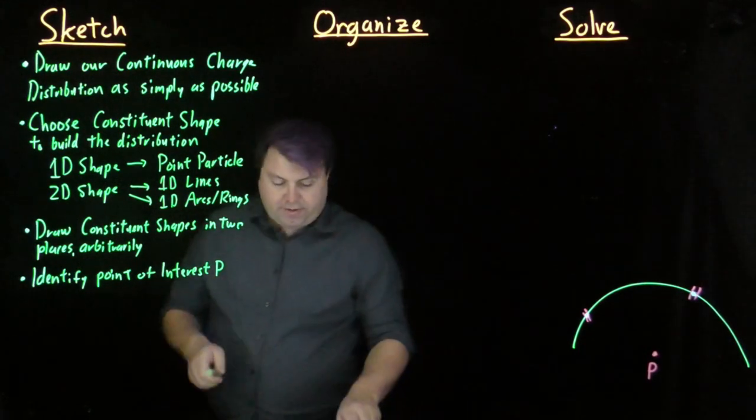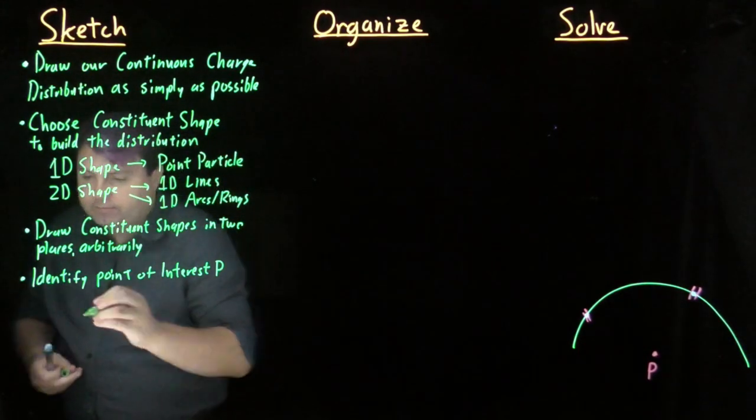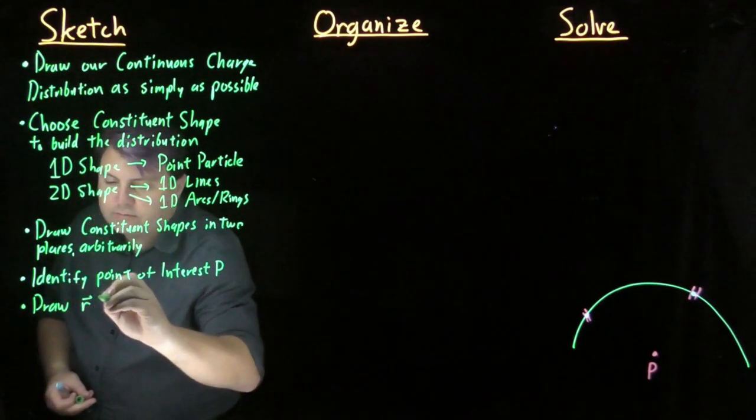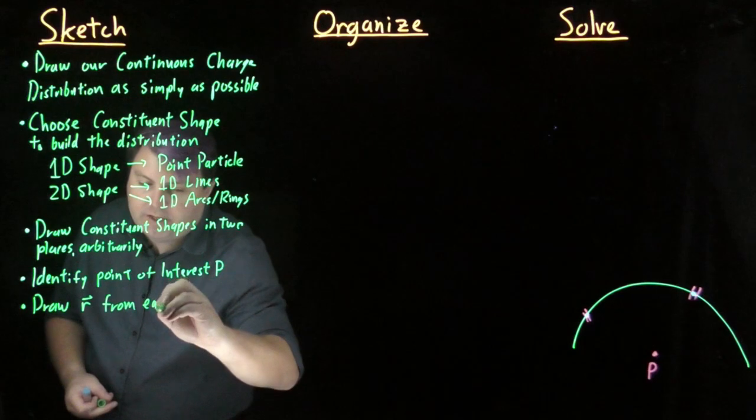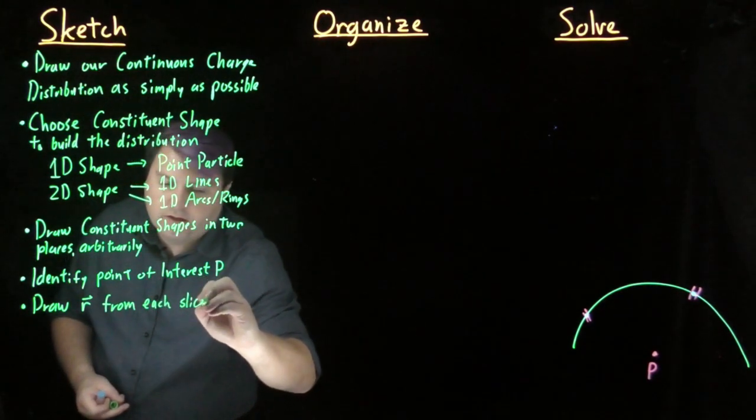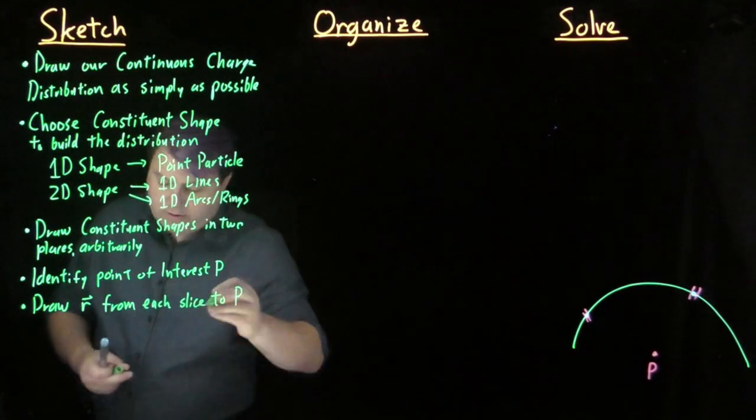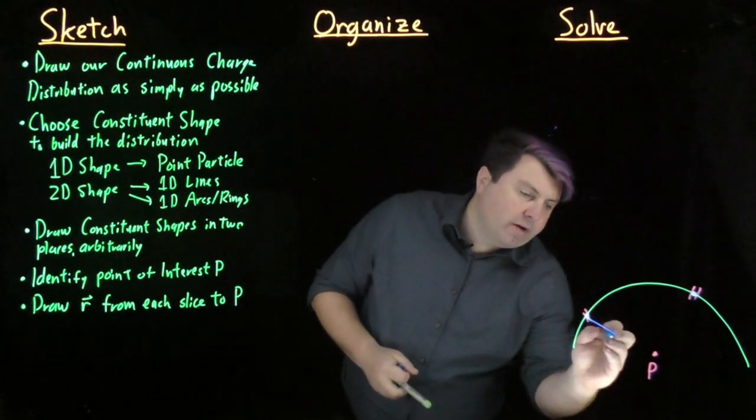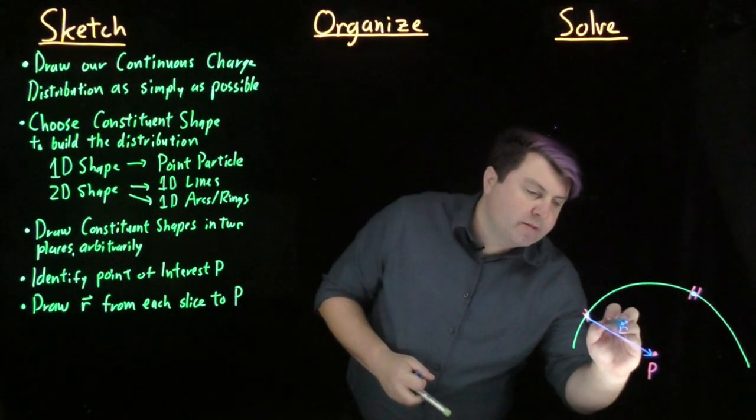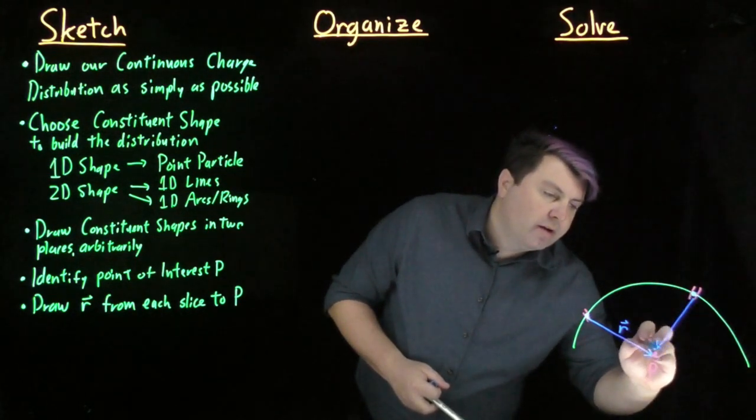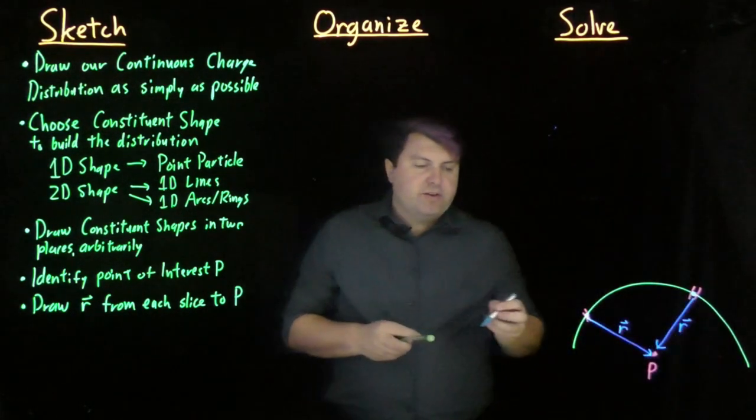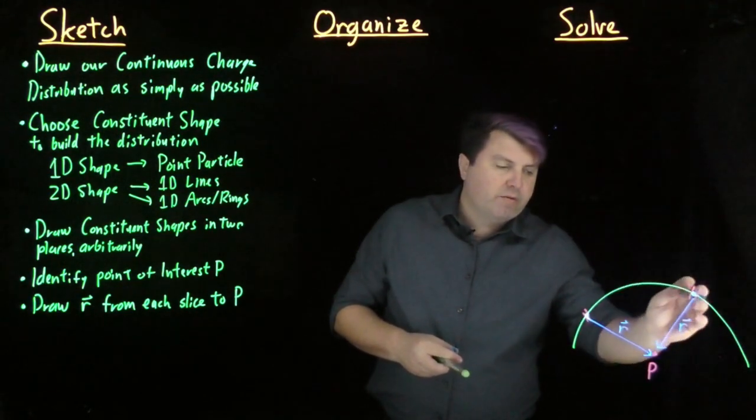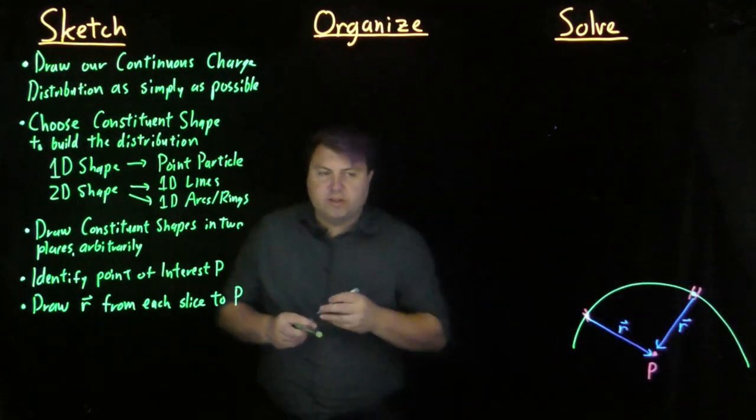Once we've identified a point of interest P, we want to draw R vector from each slice to P. From this point, I will be going this way, and this is my R vector, and this way, and this is my R vector. It's helping us understand that each part of this is its own slice, and we're drawing our own R vector from each of these points.